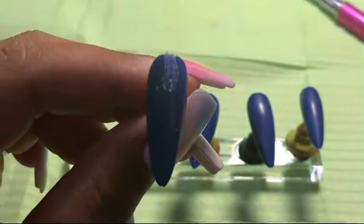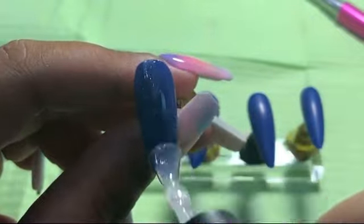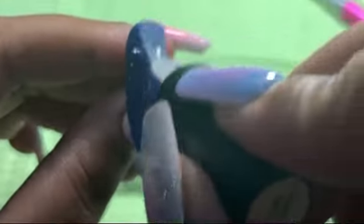Take your top coat, go right over all that. That's actually going to make it look like it's not there and it's going to smooth it out just a tad bit.